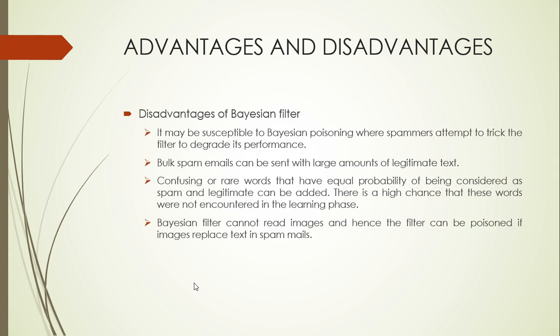Here are the disadvantages. The Bayesian filter may be susceptible to Bayesian poisoning, where spammers attempt to trick the filter and degrade its performance. Bulk spam mails can be sent with large amounts of legitimate text to confuse the filter. Also, rare words — words not encountered in the learning phase — can be sent in the content. Furthermore, the Bayesian filter cannot read images, and hence the filter can be poisoned if images replace text in spam mails.